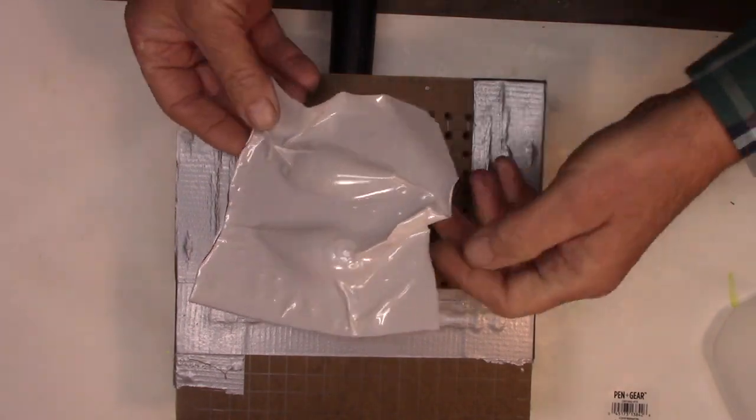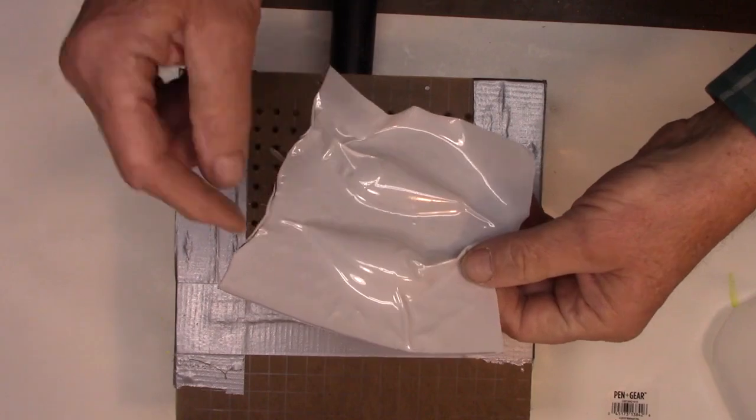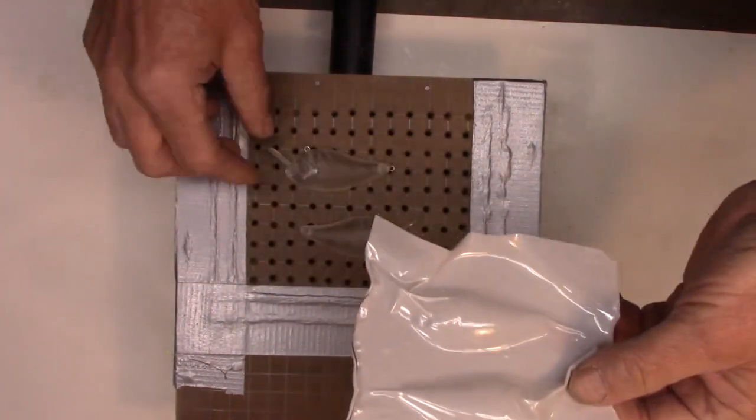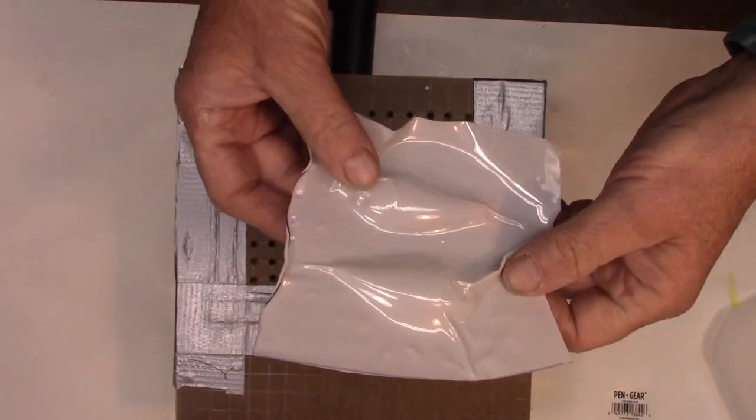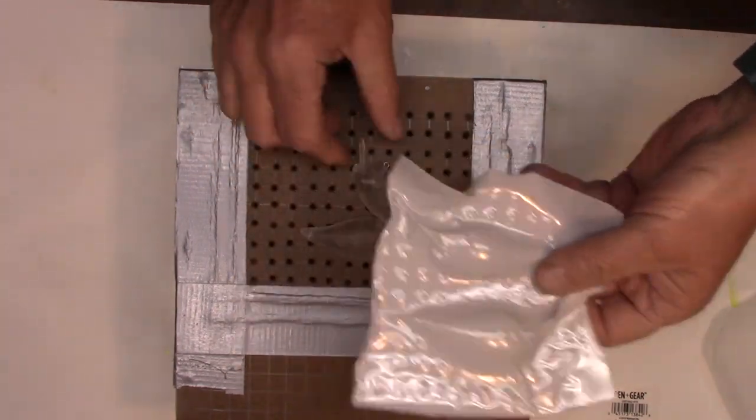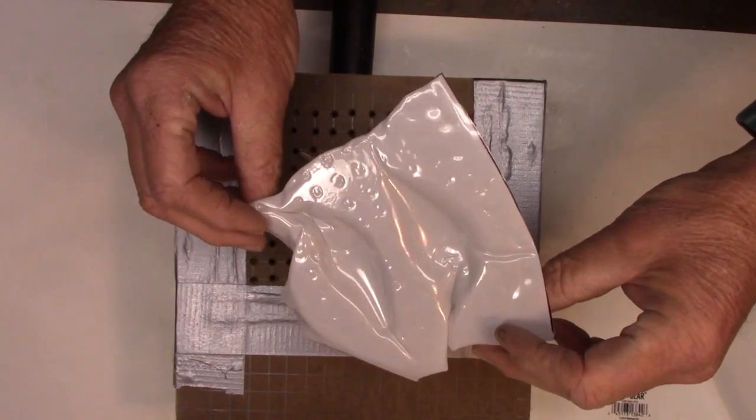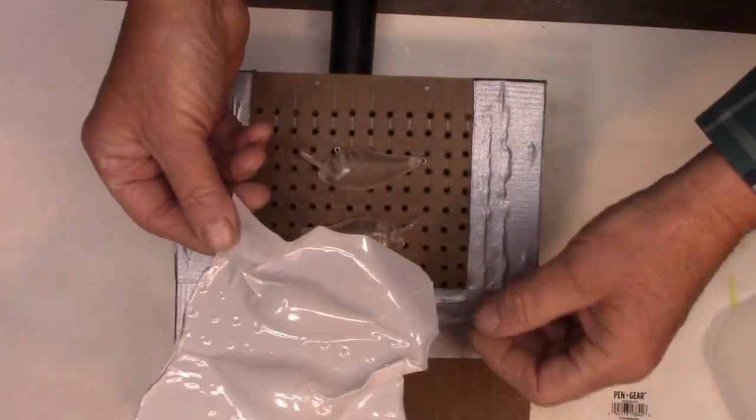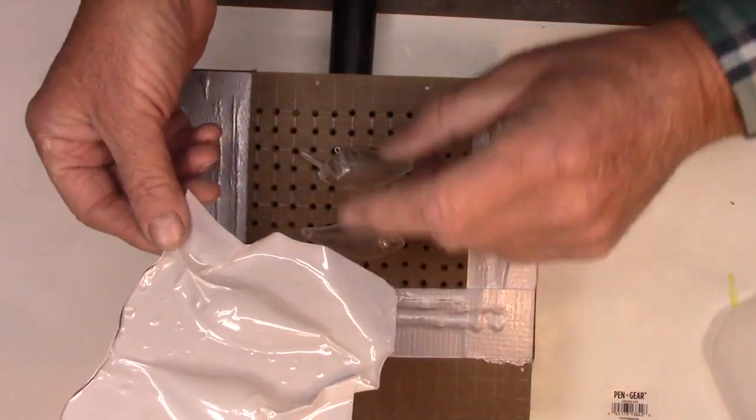And there we are, popped right out. Now all I have to do is cut around this little bit. And then the key is, once it gets all hardened up good, that'll slip right inside. And there you go. With just that piece of plastic, you can draw your lines in.